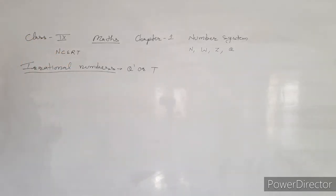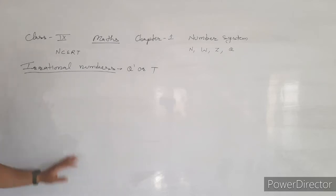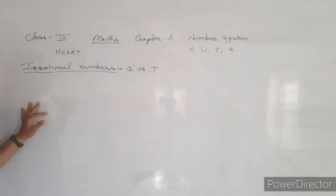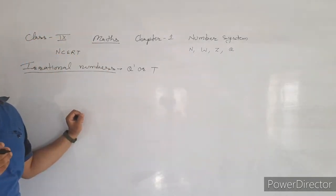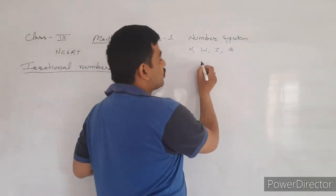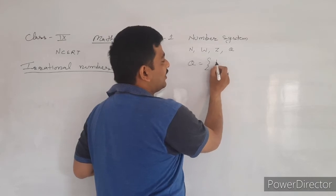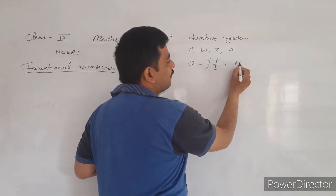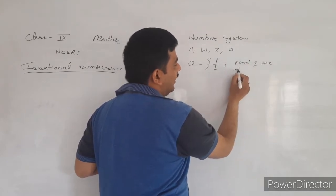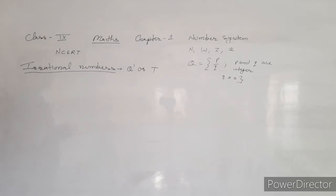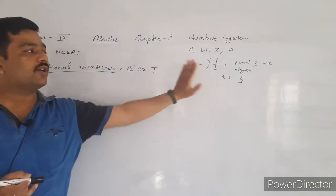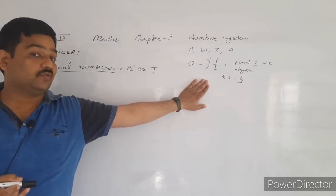The mathematicians Dedekind and Cantor defined irrational numbers. If a number cannot be expressed in the form of p upon q — any number which is not in p upon q form — that is irrational. Rational is just the opposite of irrational. For rational numbers, we had p upon q form such that p and q are integers and q is not equal to 0. Irrational numbers are numbers which we cannot express in the form of p upon q.